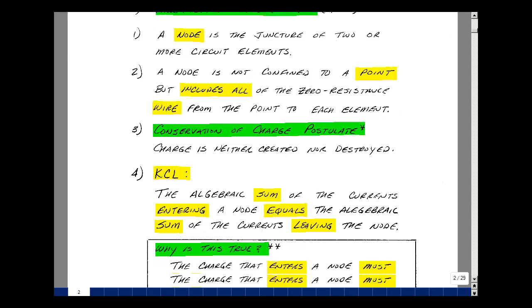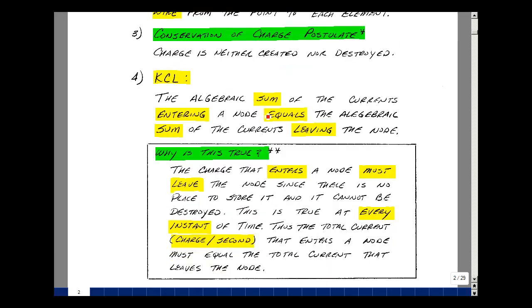Let me define Kirchhoff's current law. The algebraic sum of the currents entering a node equals the algebraic sum of the currents leaving the node. Why would this be true? The charge that enters a node must leave the node since there's no place to store it, and it can't be destroyed. This is true at every instant in time, and recall that current is charge per unit time. Total current that enters a node must equal the total current that leaves a node.